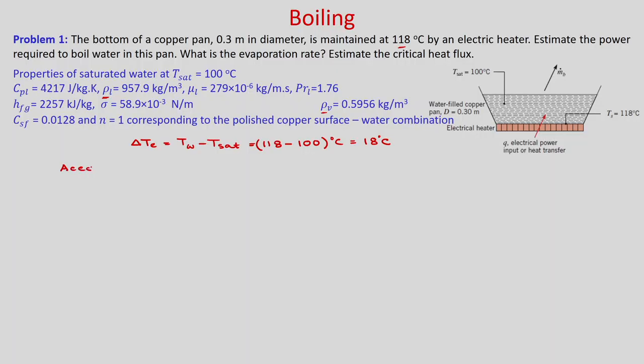If you see the Nukiyama curve of boiling, for this excess temperature of 18 degree centigrade it falls in the nucleate boiling region. So we need to use the expression of heat flux from the nucleate boiling region. According to the boiling curve, nucleate boiling will occur.